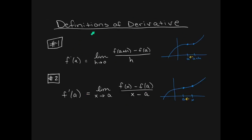There's another way of writing the definition of derivative. Instead of labeling the neighboring point as a plus h and having h approach zero, we can label that neighboring point as just x, and then x approaches a for the two points to get closer together. In this case, the secant slope formula is [f(x) minus f(a)] divided by [x minus a]. All of the theory and ideas are exactly the same — this definition has h approaching zero, and this definition has x approaching a. That's the definition of derivative using limits.